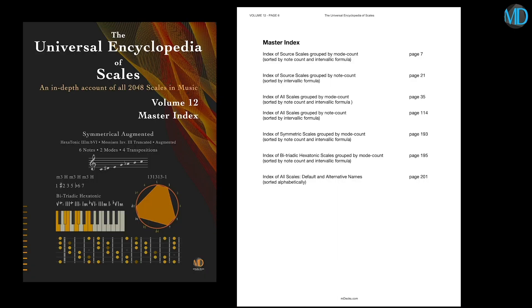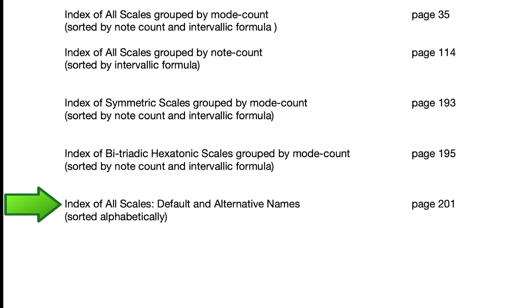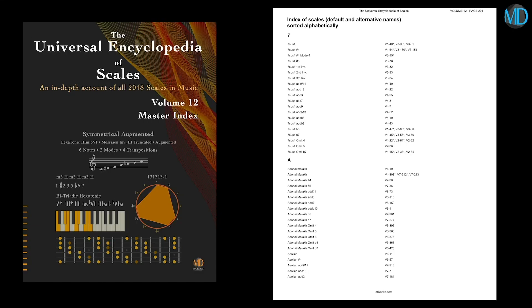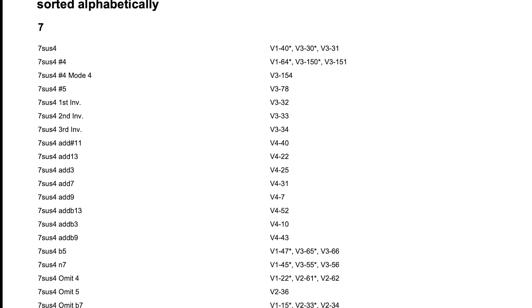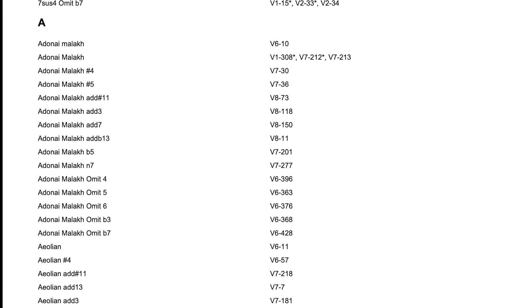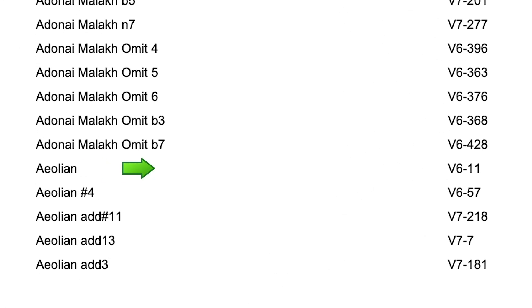So let's say you want to find a scale by name. Give me the name of a scale. Let's try Aeolian. So we can use this last index here — index of all scales, default and alternative names, sorted alphabetically, page 201. There it is. Volume 6, page 11.